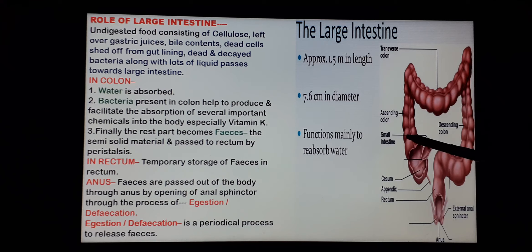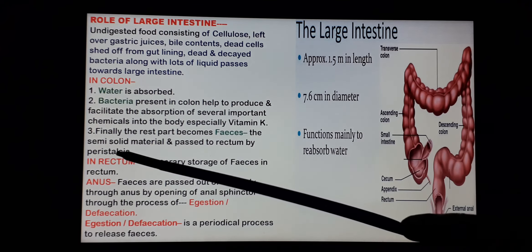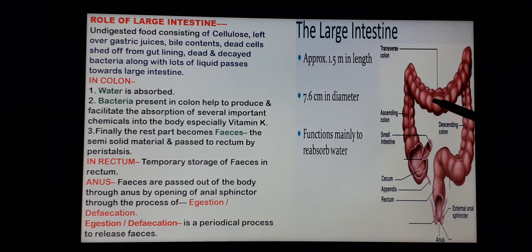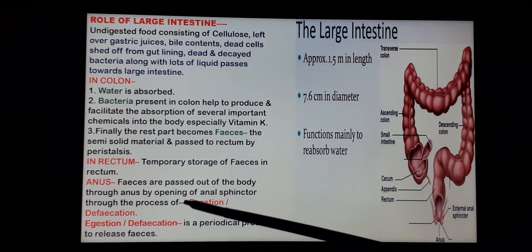Various friendly bacteria present in the large intestine help produce and facilitate the absorption of various chemicals like vitamin K. After absorption of these chemicals and water, the leftover semi-solid or solid material becomes the fecal matter or feces. This fecal matter, through peristaltic movement, passes from the colon towards the rectum for temporary storage, until the anal sphincter opens to release the undigested waste as feces from the anus — a phenomenon called egestion.